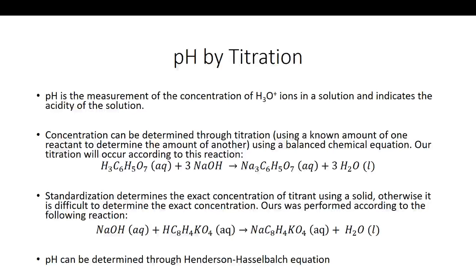The fourth and final section of our experiment was determining the pH by titration. pH is the measurement of the concentration of H₃O⁺ hydronium ions in a solution and helps indicate the acidity. Any solution where you have more of these ions will have a lower pH, relating to a higher acidity. The concentration of our solution can be determined through titration — using a known amount of one reactant to determine the amount of another reactant present, using the balanced chemical equation.